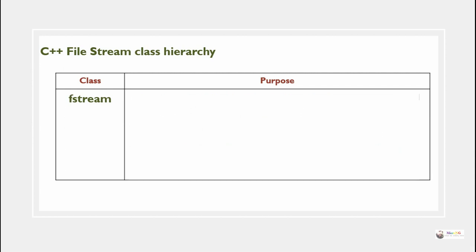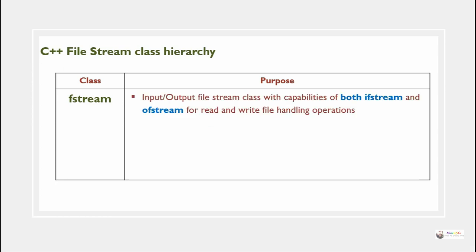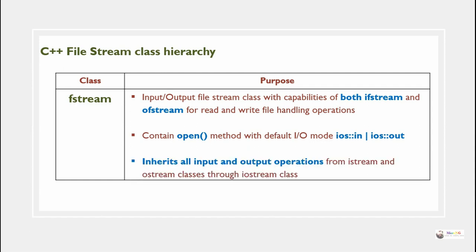fstream is the input-output file stream class with the capabilities of both ifstream and ofstream to perform read and write file handling operations. It contains an open method with default I/O mode ios::in and ios::out, and inherits all input and output operations from istream and ostream classes through the iostream class.